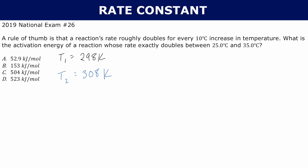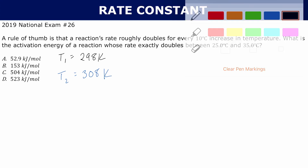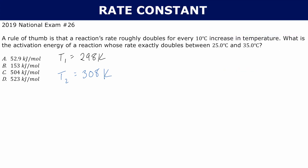Since we're comparing temperatures and rate constants to find the activation energy, this is a clear sign that we're going to be using the two-point form: the natural log of k2 over k1 is equal to Ea over R times 1 over T1 minus 1 over T2.